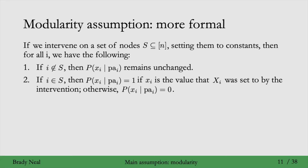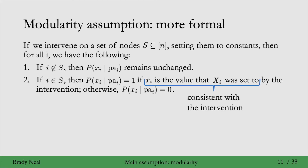And that probability of x_i given its parents will be 0 if x_i is inconsistent with the value that X_i was set to by the intervention. Another way of saying this is that if x_i is the value that the random variable X_i was set to by the intervention, then we say that x_i is consistent with the intervention — terminology we'll be using later. That is the modularity assumption for causal graphs. One of the main consequences is that it allows us to efficiently encode many different interventional distributions.